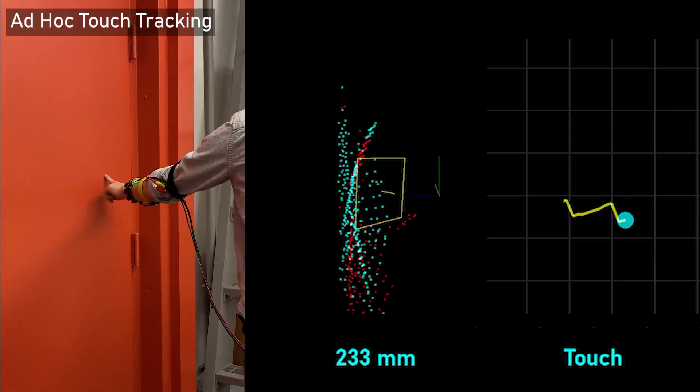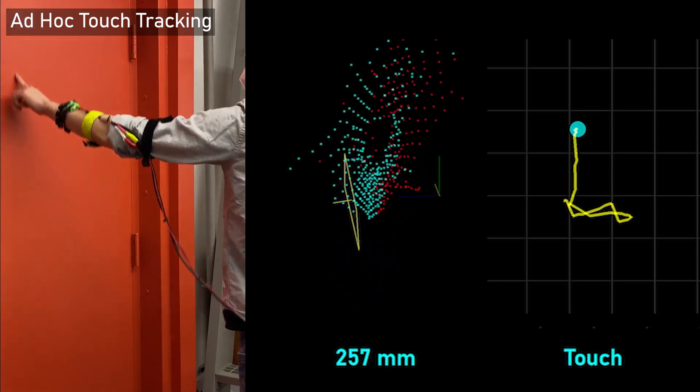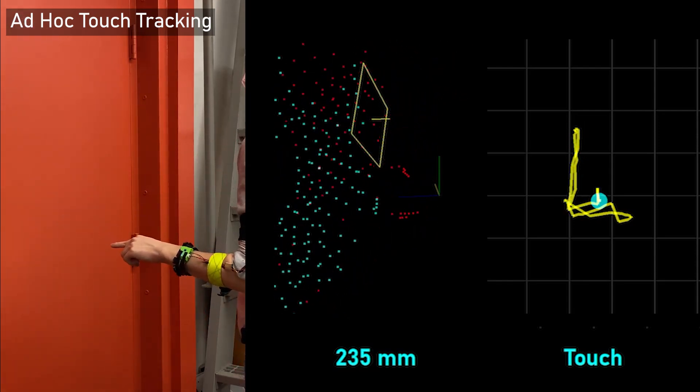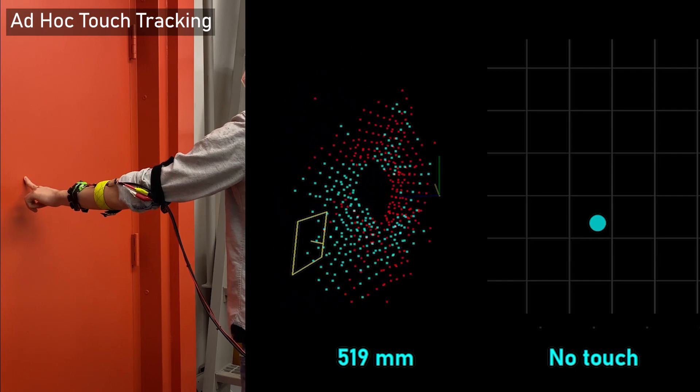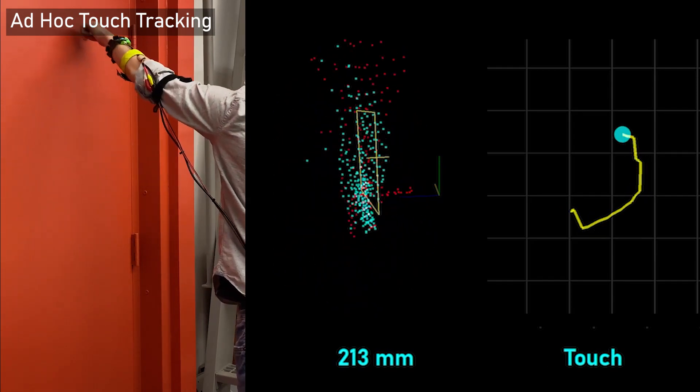Third, DiscoBand can appropriate everyday surfaces for ad hoc touch input, including the ability to detect clicks, swipes, and even basic shapes.